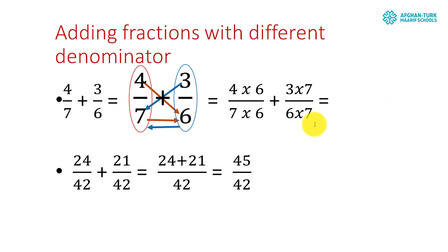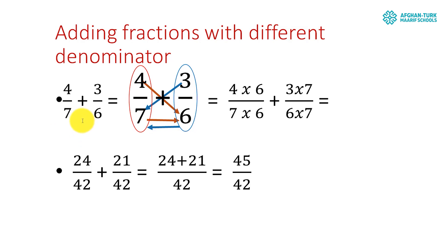The second rule is for unlike fractions. As I said, we cannot directly add unlike fractions — those fractions whose denominators are not the same. So for this, the rule is: first make the denominators equal, then add. For this, it's straightforward.